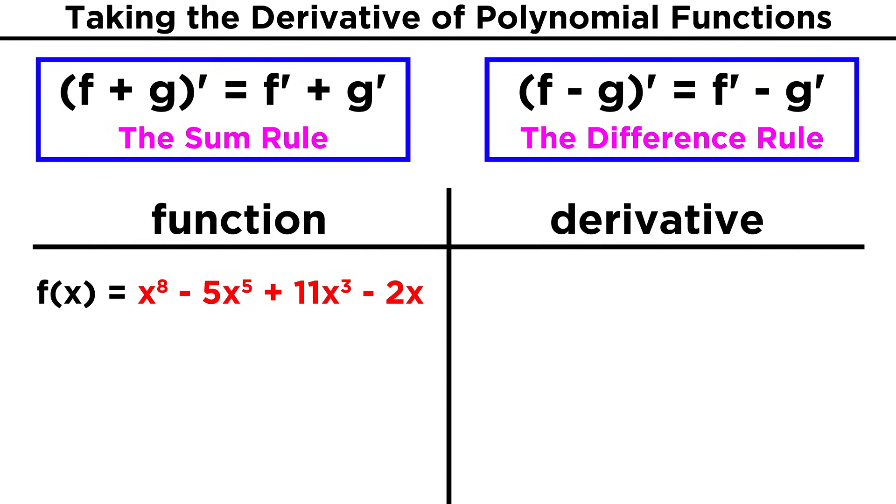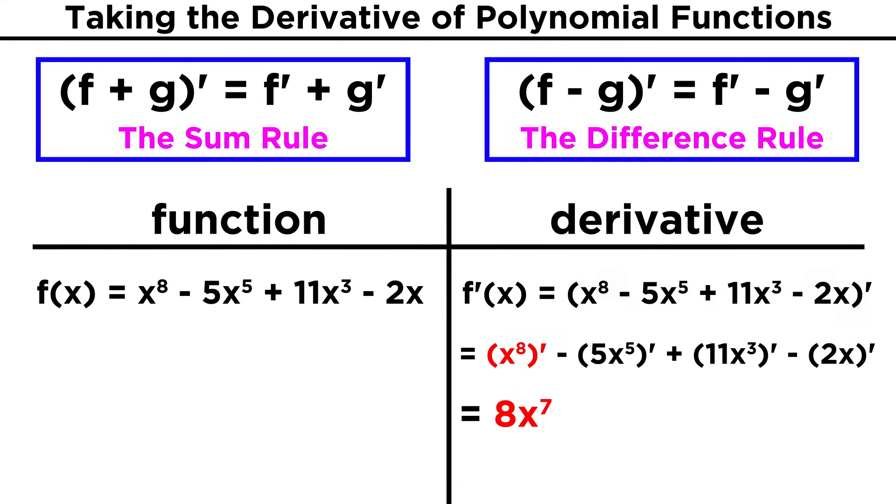Let's try just one more for practice. Try x to the eighth minus five x to the fifth plus eleven x cubed minus two x. Again, moving left to right, we get eight x to the seventh minus twenty-five x to the fourth plus thirty-three x squared minus two.